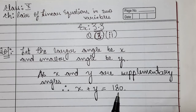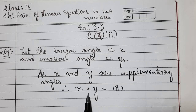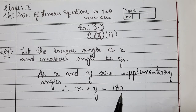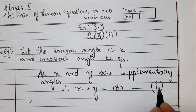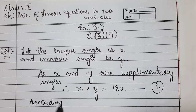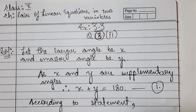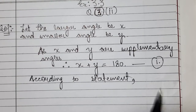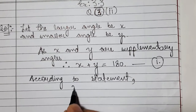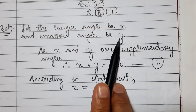Supplementary means the sum is 180 degrees, and complementary means the sum is 90 degrees. So for supplementary angles, x plus y equals 180 degrees. This is our first equation. Now according to the statement, the larger angle x is 18 degrees more than the smaller angle.